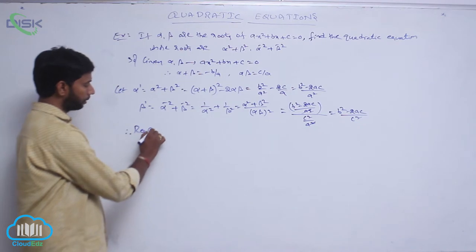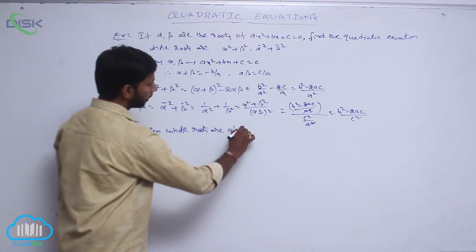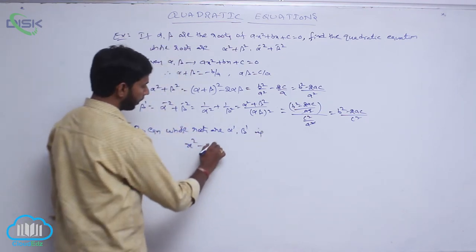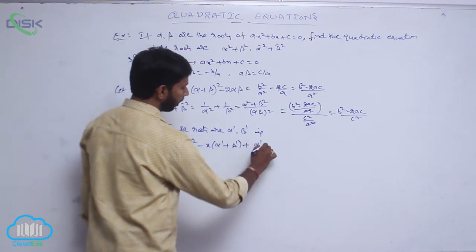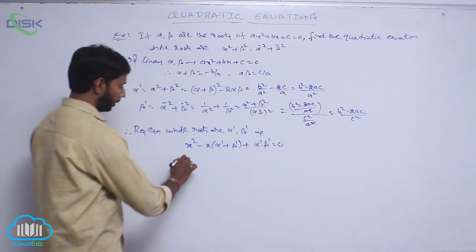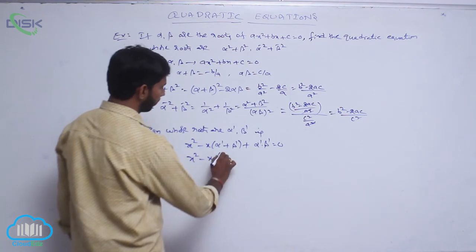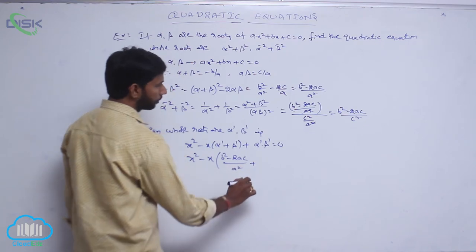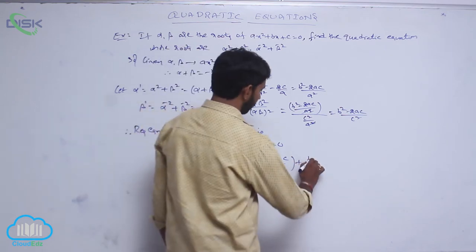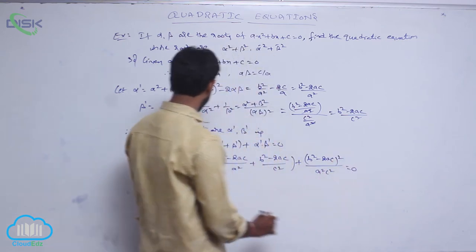Therefore the required equation whose roots are α' and β' is x² - x(α' + β') + α'·β' = 0. Substituting the values: x² - x·[(b² - 2ac)/a² + (b² - 2ac)/c²] + (b² - 2ac)²/(a²c²) = 0. This is the required equation.